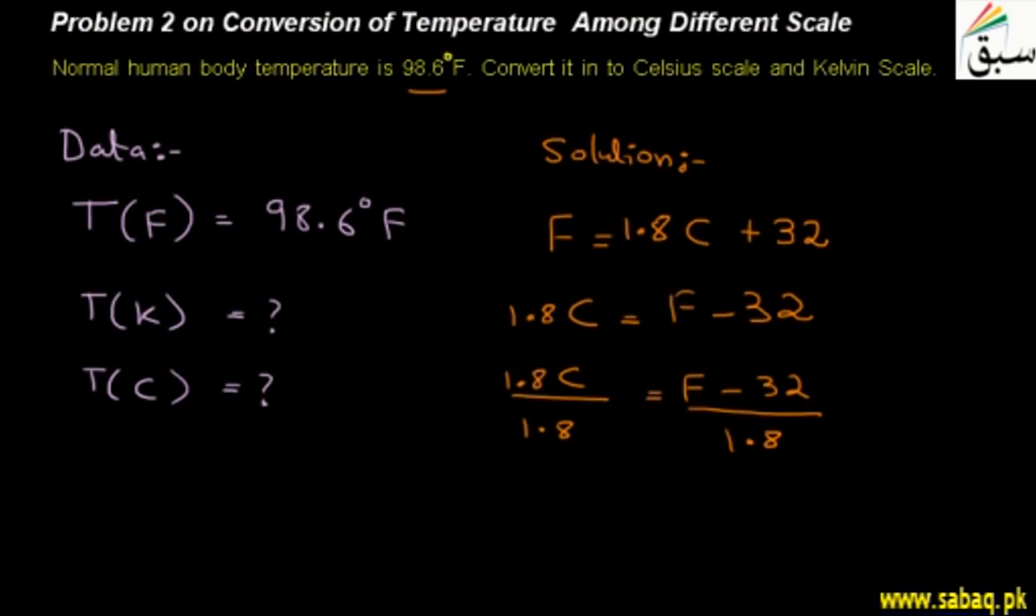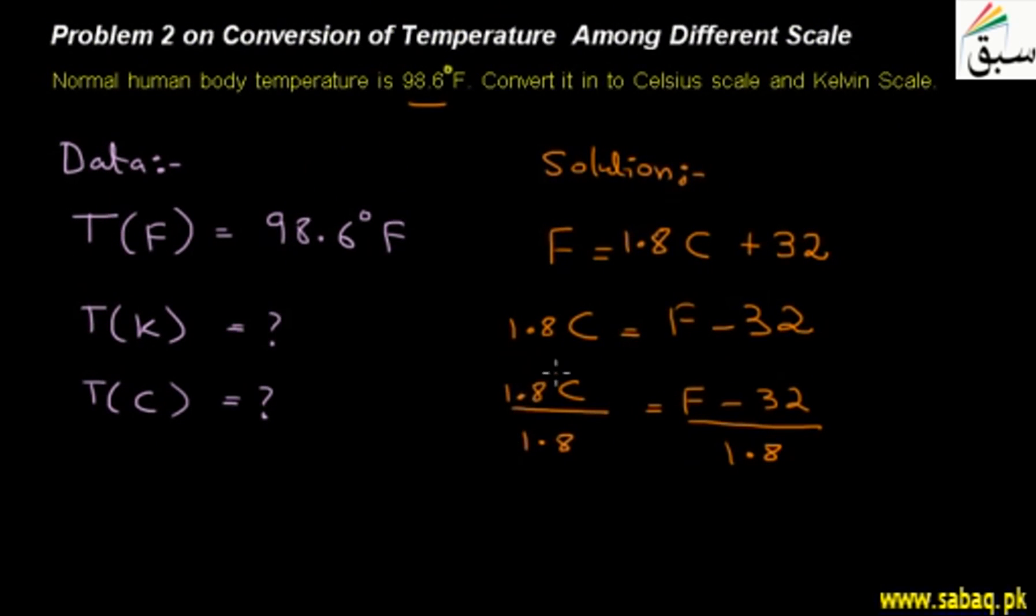Now if you see students here, we have 1.8 and 1.8 will cancel. So C is equal to how much? F minus 32 whole divided by 1.8. Now just you have to input values.